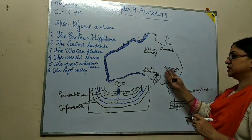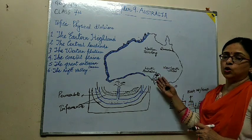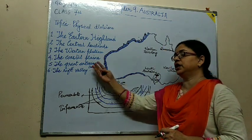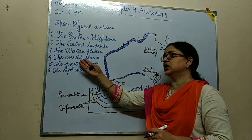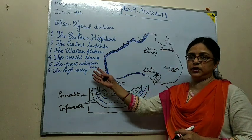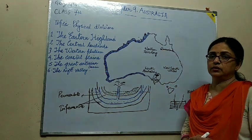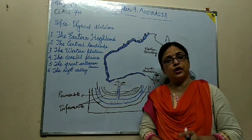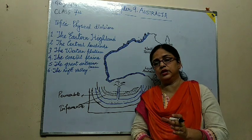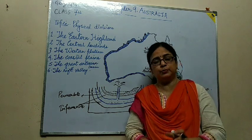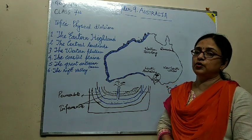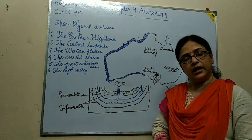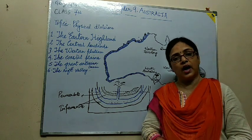Now we have completed all the physical divisions — the four physical divisions along with the two important features of Australia. Here we have completed the chapter. The only remaining part is the case study of Australia, which is related to sheep rearing, as Australia is famous for sheep rearing. So we will learn about it in our next class. Till then, have a good day.